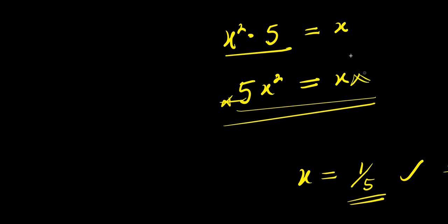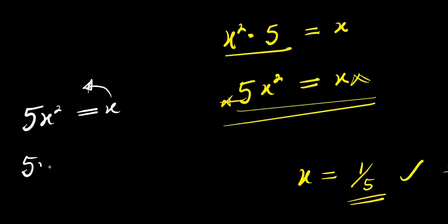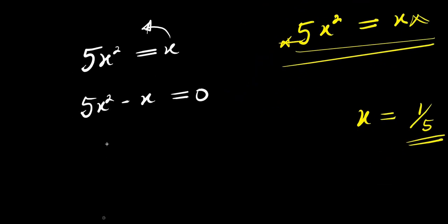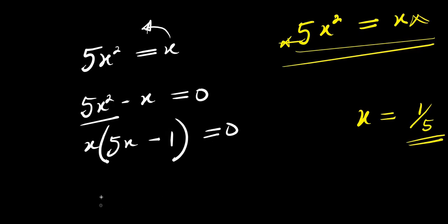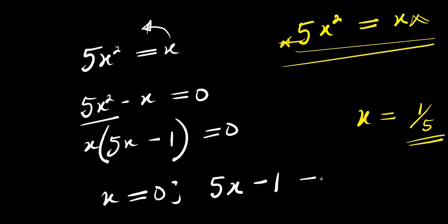We have the equation 5x squared equals x. Moving x over, we get 5x squared minus x equals zero. We factor out the common term x: x times (5x minus 1) equals zero. So we have x equals 0, and also 5x minus 1 equals zero.